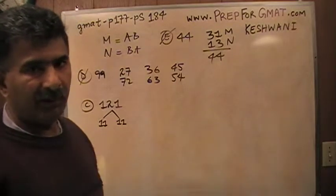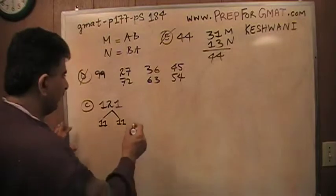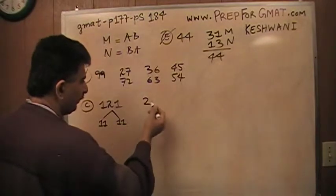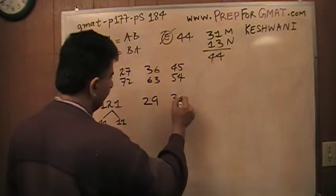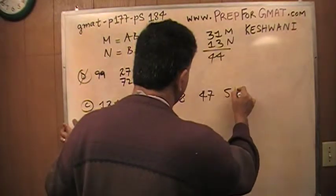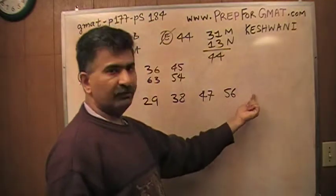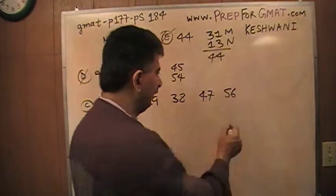So can you think of a scenario where the sum of the 2 digits might be 11? Obviously, we cannot start with 1 because you cannot have 1 and 10 because 10 is not a digit. So we have to start with 2. 2, 9, 3, 3, 8, 4, 7, 5, 6 and then if I continue, the next one will be 6, 5 but there is no point writing 6, 5 because 6, 5 will actually go here.